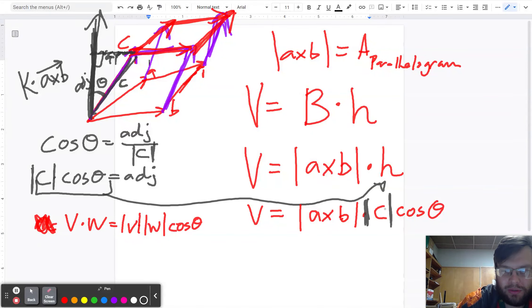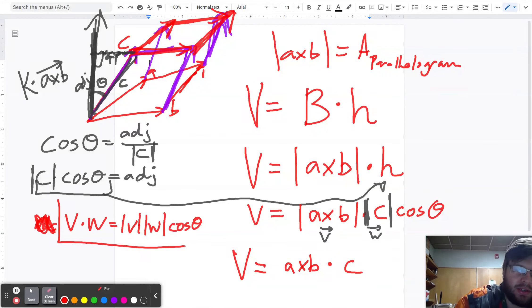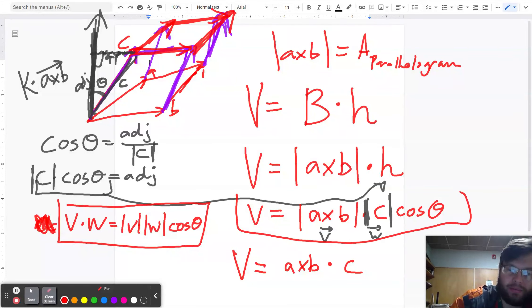Well, what do we just got here? We have a V dot W equals magnitude V magnitude W cosine theta. And so here is like my vector V. Here is my vector W. So what I can say now is V is equal to A cross B dotted with C. Just by applying this definition using the angles to what we had figured out about the volumes.